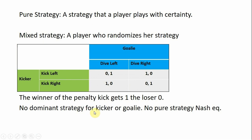There is no dominant strategy for either the kicker or goalie, and therefore there is no pure strategy Nash equilibrium. From the kicker's perspective, neither row dominates — one is greater than zero here, but one is also greater than zero on the other side. Likewise for the goalie, neither column dominates. So there is no dominant strategy for either player, and therefore no pure strategy Nash equilibrium.